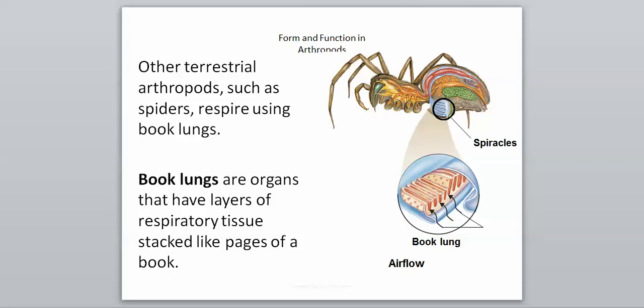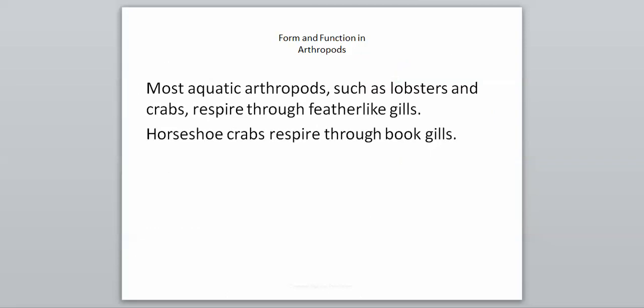Other terrestrial arthropods, such as spiders, respire using what are known as book lungs — organs that have layers of respiratory tissue stacked like pages of a book. Most aquatic arthropods, such as lobsters and crabs, respire through feather-like gills, which are the organs that help gas exchange occur underwater. Horseshoe crabs respire through book gills, which are similar to book lungs except they function underwater instead of above water. That's it for our first part of Chapter 28 — let me know if you have any questions.